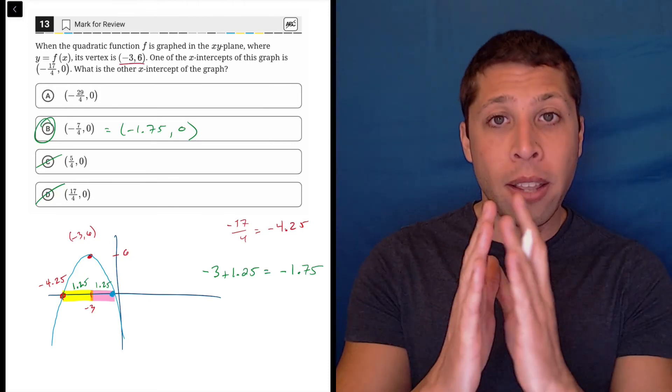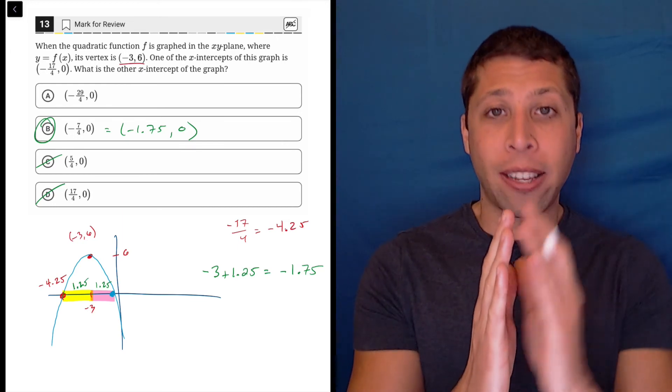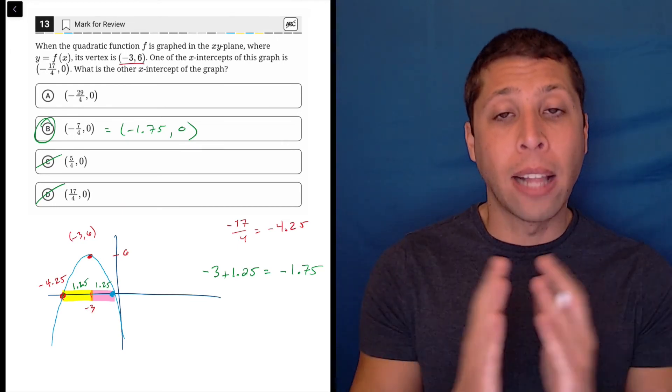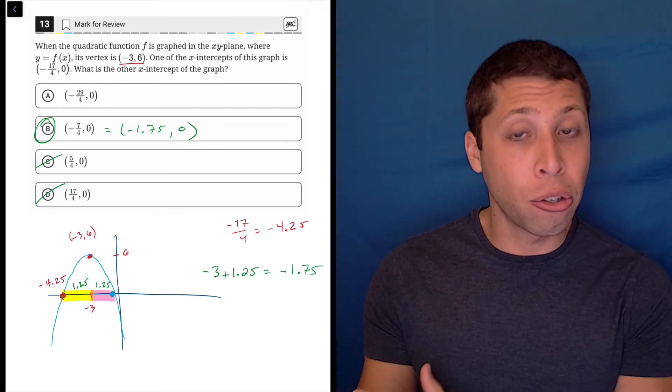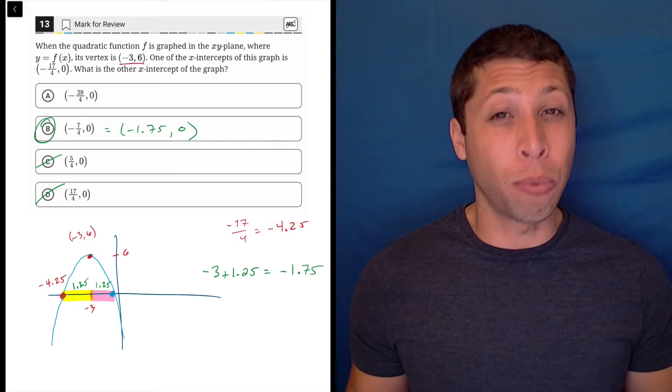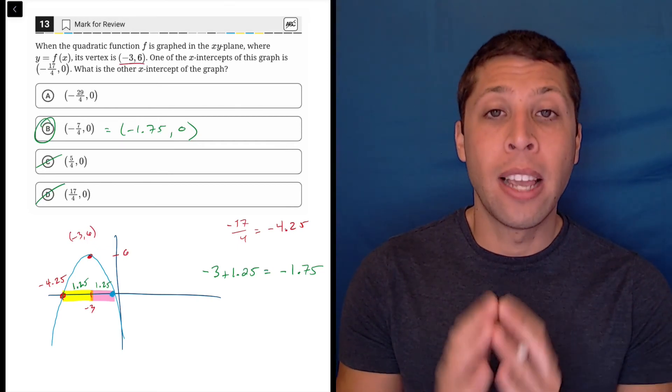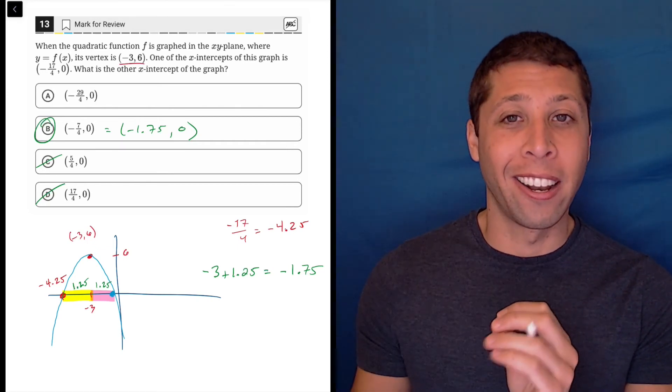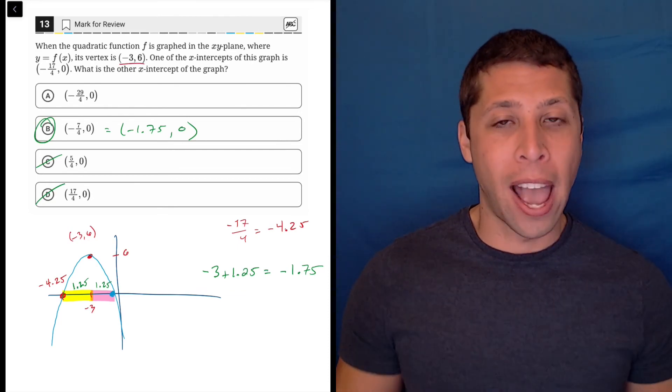The parabolas are symmetrical. The distance on either side of that axis of symmetry is going to be the same. And so we can use that when we have the x-intercepts. We can use that for any points, really. But regardless, if we have a vertex and we know one side, we can mirror it over to the other. And that's what we did here.